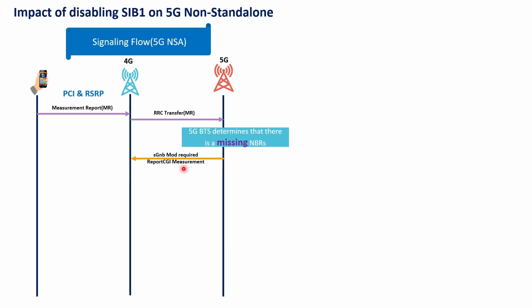So the 5G will request from the 4G to ask the UE to report the CGI measurement. This CGI information covers the gNB identity and cell identity. The 4G will deliver an RRC reconfiguration message covering the report CGI measurement request. It also delivers the DRX configuration settings — the main reason for delivering DRX is that the serving cell will terminate all downlink data reception for the UE so it can measure system information from the target 5G cell. Once the UE receives this message, it replies with RRC reconfiguration complete.